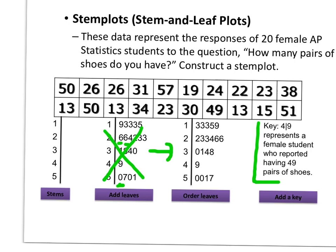Again as I mentioned before it's really important to have a key here to represent to tell the reader exactly what the numbers represent. In this case 4-9 represents 49. You can pick any example in there just to show that that's what the numbers represent. Okay so this is a stem and leaf plot.